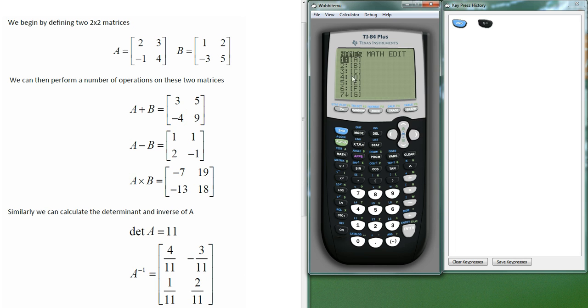This gives you a list of the matrices that are available. So I'm going to move across, select edit, and I'm going to edit matrices A and B here. Press enter to start off with.